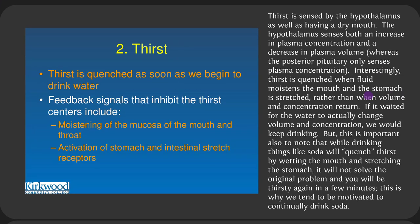Thirst is sensed by the hypothalamus as well as by a dry mouth. The hypothalamus senses both an increase in plasma concentration and a decrease in plasma volume, whereas the posterior pituitary only senses plasma concentration. Interestingly, thirst is quenched when fluid moistens the mouth and the stomach is stretched — rather than when the volume and concentration of blood actually changes. If the system waited for water to actually change blood volume and concentration, we'd keep drinking far too much. This is why soda seems to quench thirst temporarily but doesn't solve the concentration problem, so you're thirsty again in 20 minutes. Drink water.